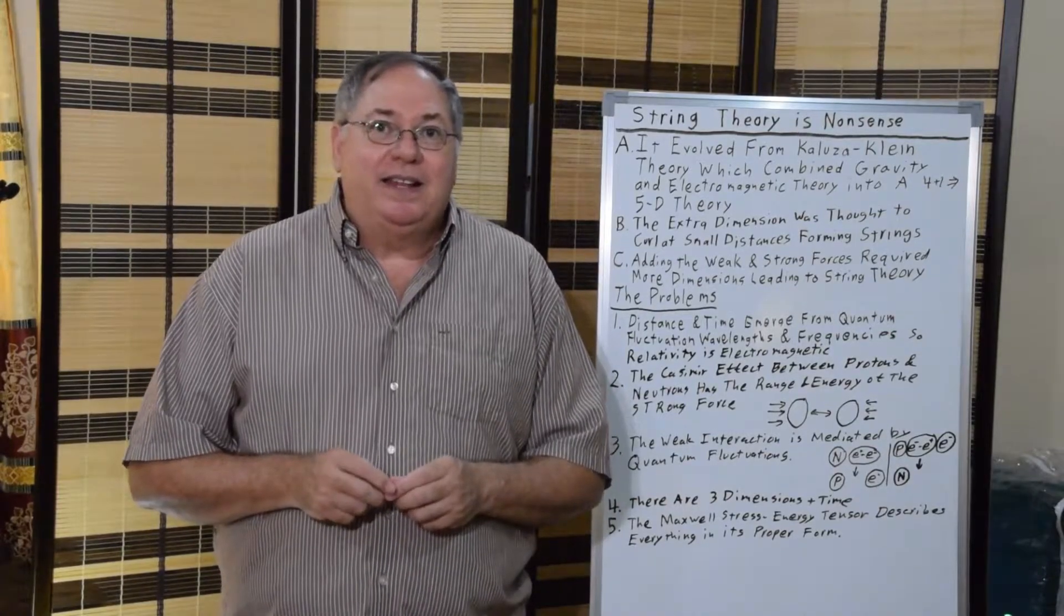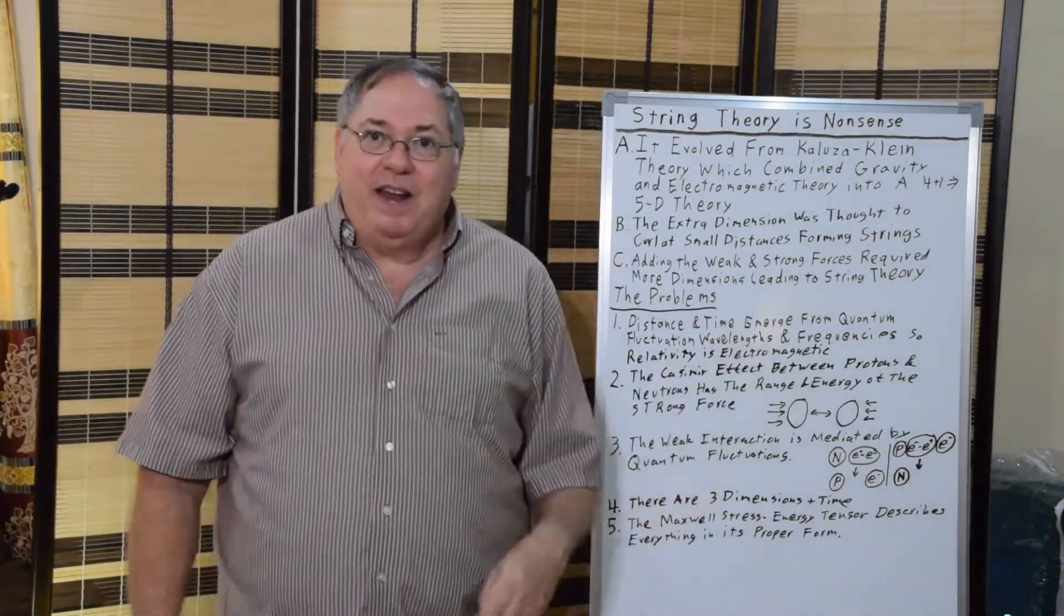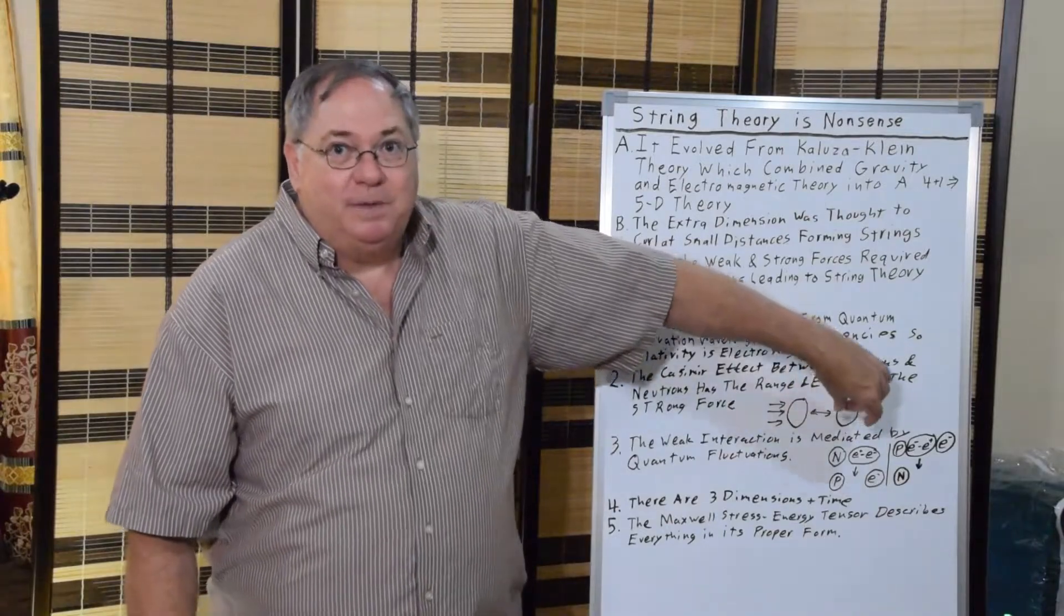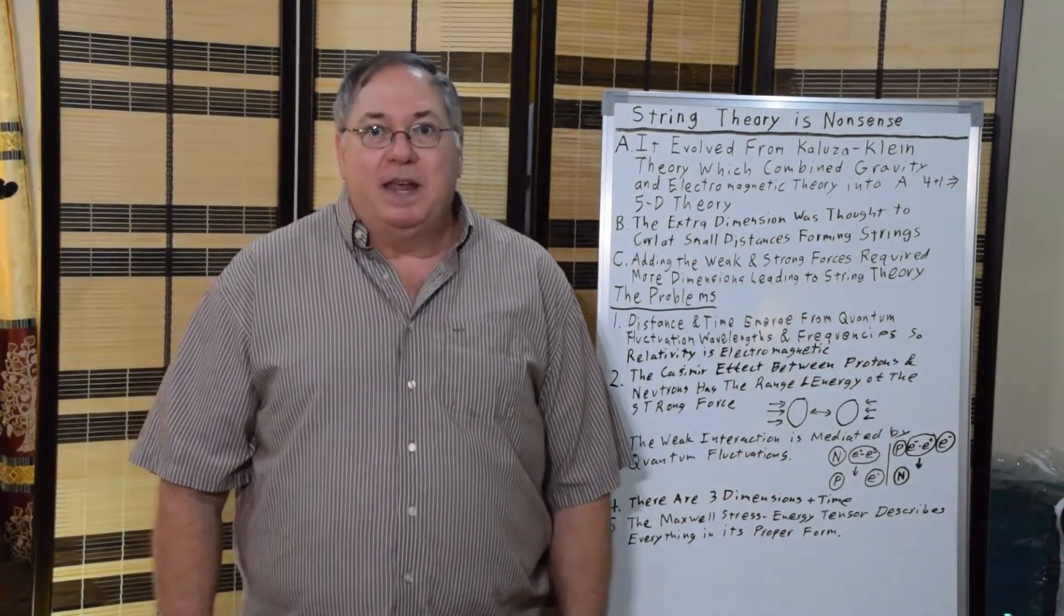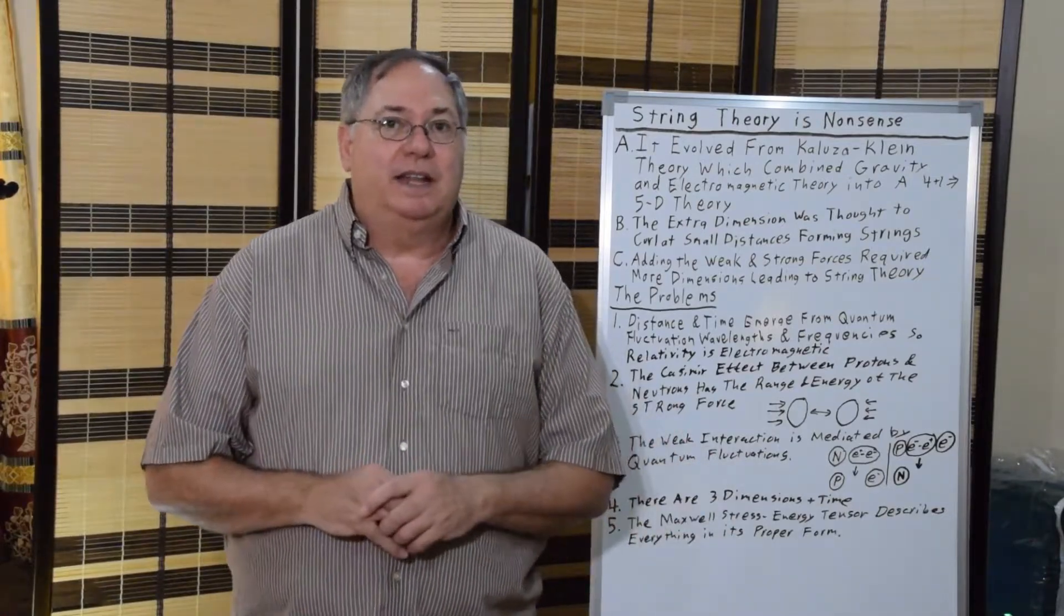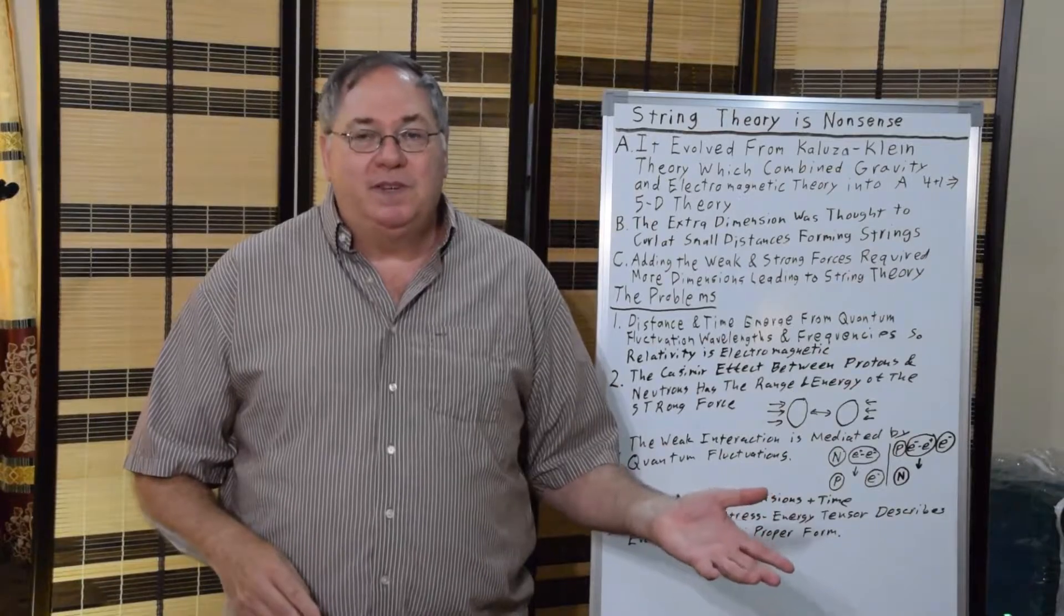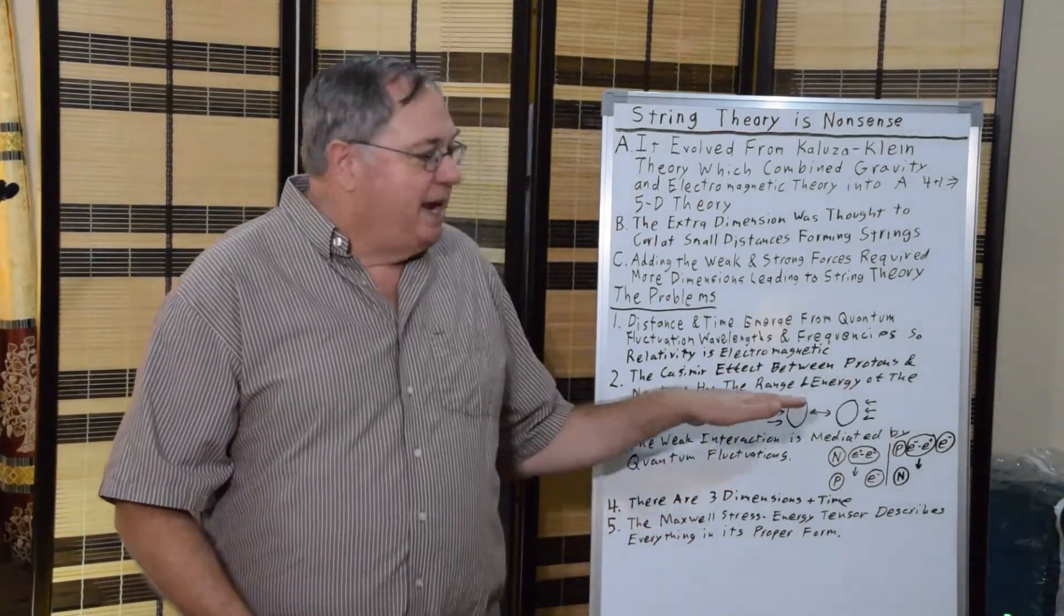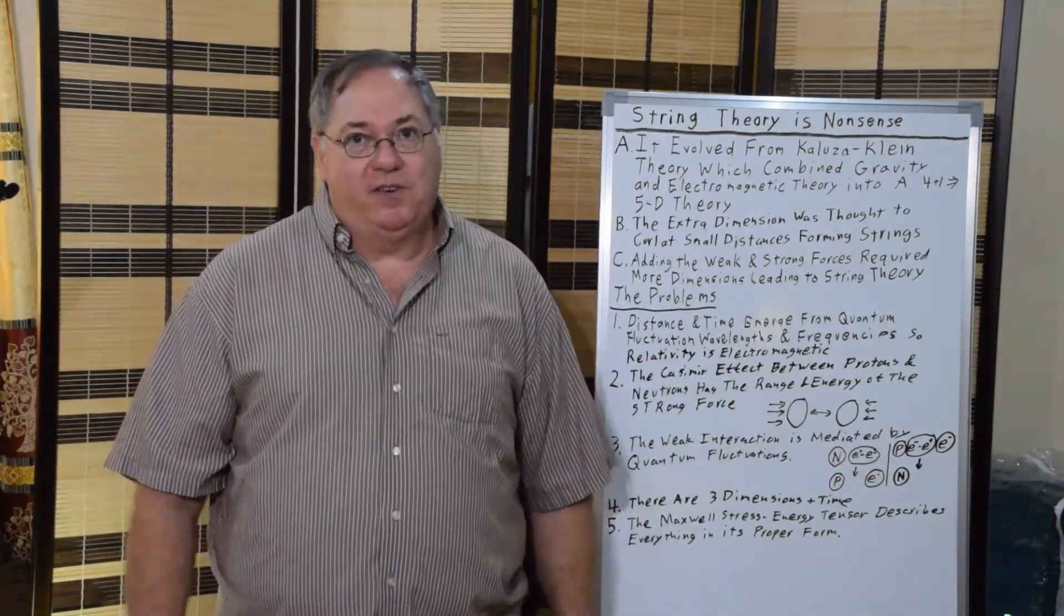And if you calculate the Casimir effect between two protons, it's the same range in energy as the strong force. You get two protons being pushed together by the quantum fluctuations. It can be a hundred times stronger than the Coulomb repulsion. This is really simple physics. Casimir effect's really established physics. This makes a strong force an electromagnetic phenomena and part of the electromagnetic equations.